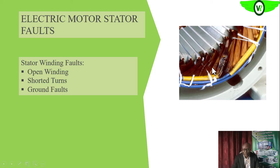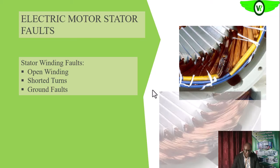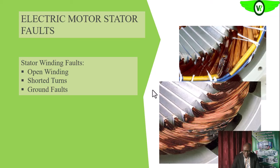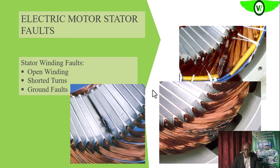Once it happens, we need to put in place measures that would prevent the contributing factors from coming together and causing these kinds of problems. These factors include grounding of the winding within the slots, shorting of turns, and open winding — all of which we have covered in the earlier section.